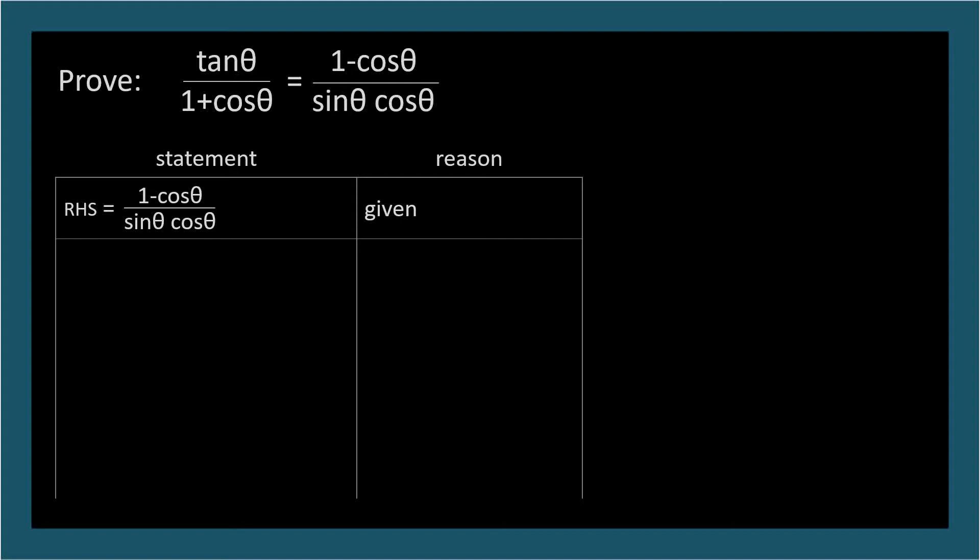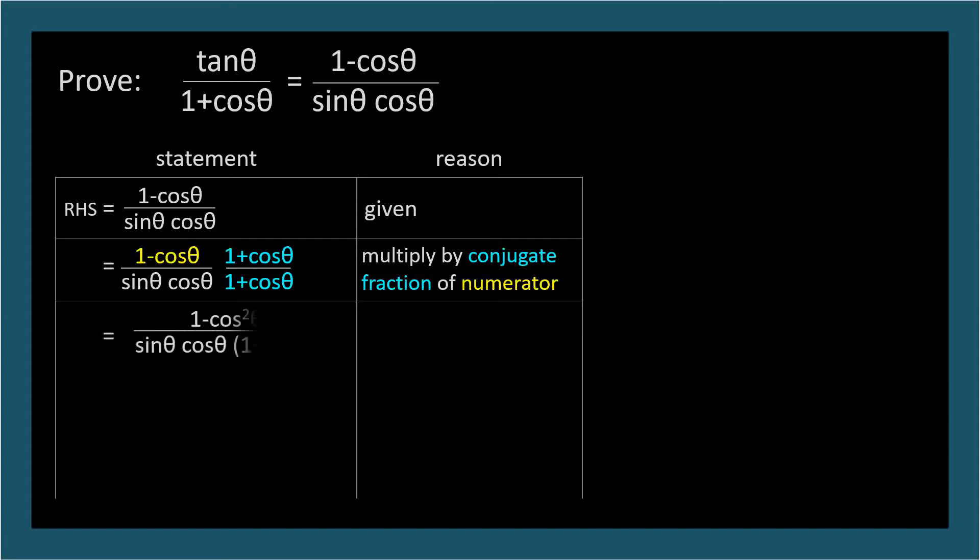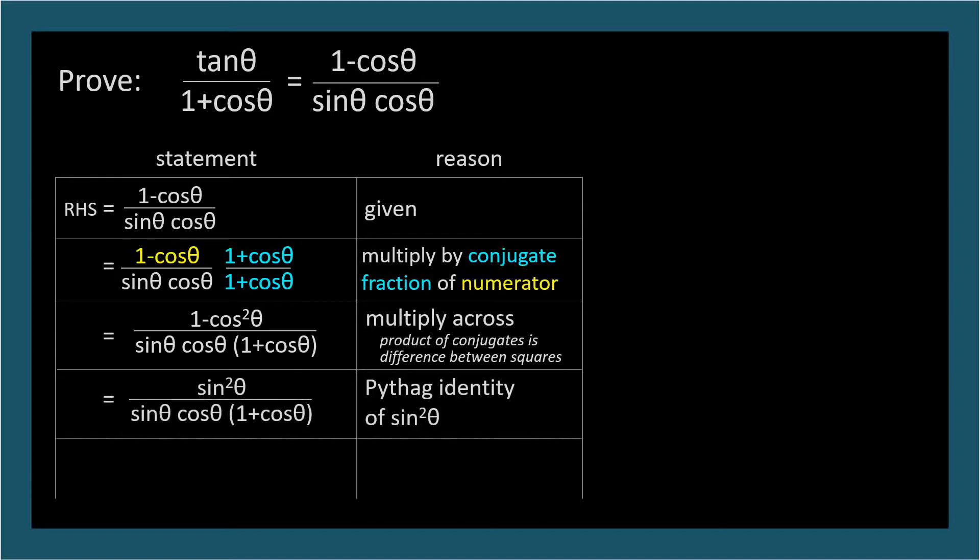Again, there's a good conjugate candidate with the numerator, 1 minus cosine theta. So let's multiply by the unit fraction, 1 plus cosine theta over 1 plus cosine theta. Multiplying across gives us the difference between squares in the numerator, 1 minus cosine squared theta, and we can substitute sine squared theta by the Pythagorean identity.